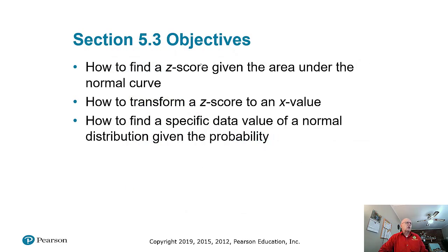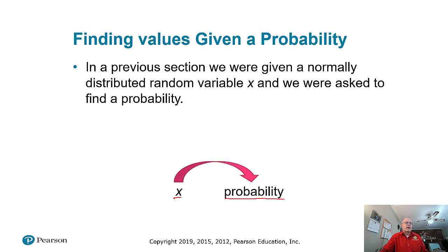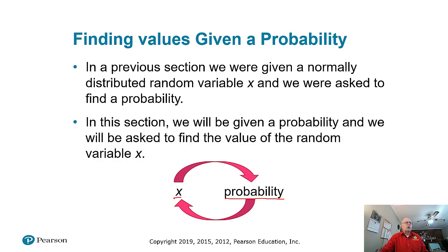These are some of the things we're going to do and I hope you'll find them pretty easy. Remember, z-scores have a mean of 0 and a standard deviation of 1. We're going to go to the same place on the calculator to find our values. So before we had x-values and we found probabilities. Now we're going to go the opposite direction.